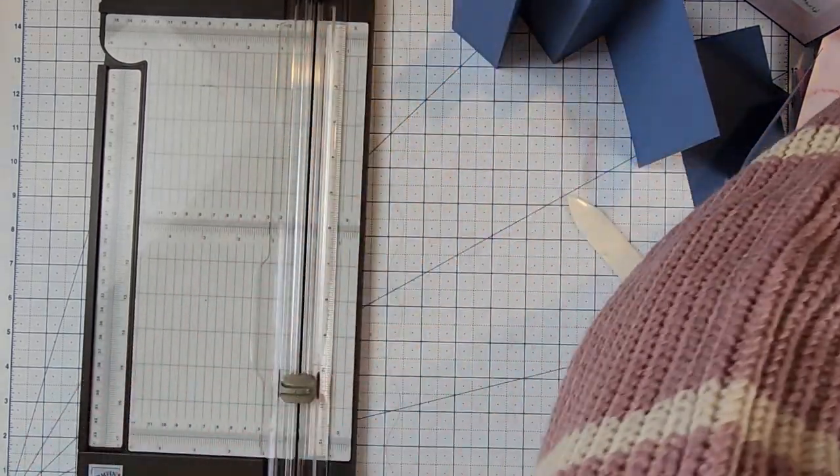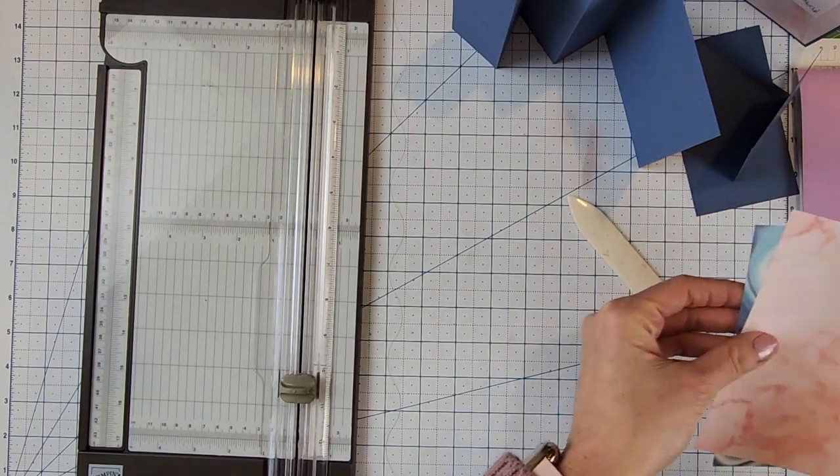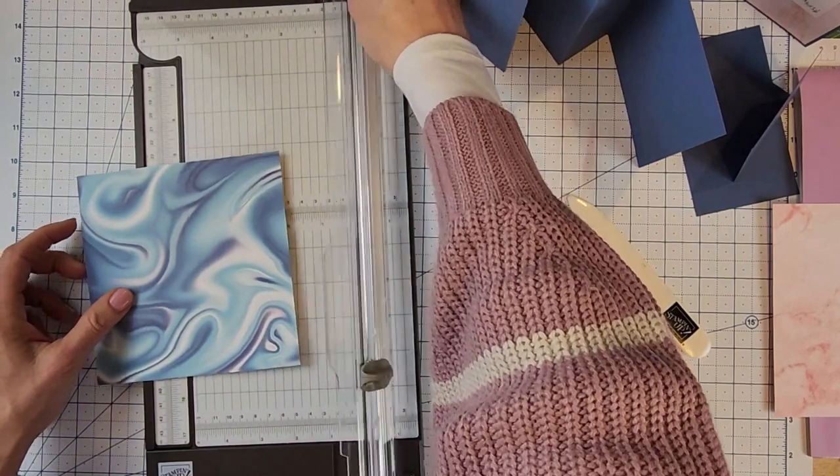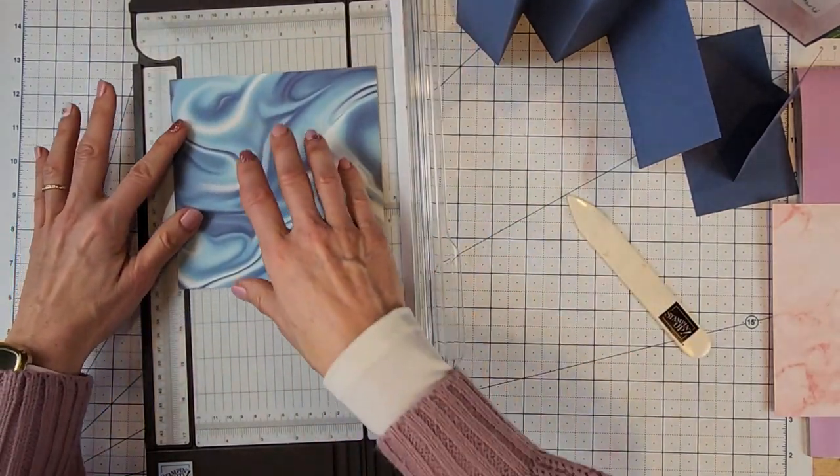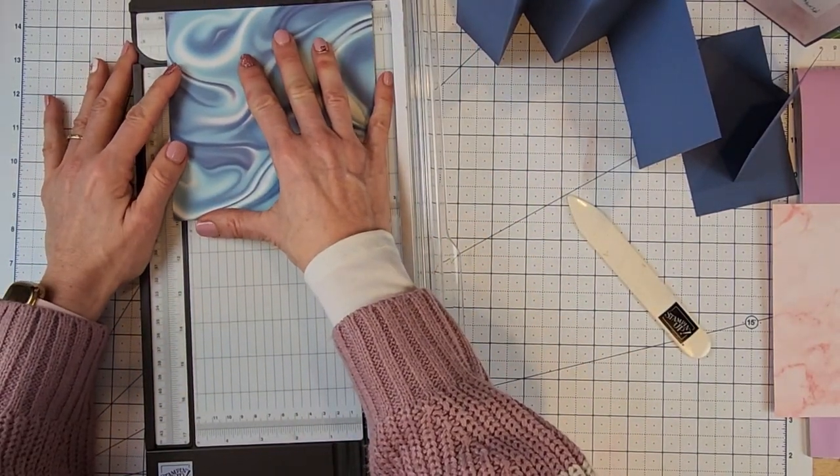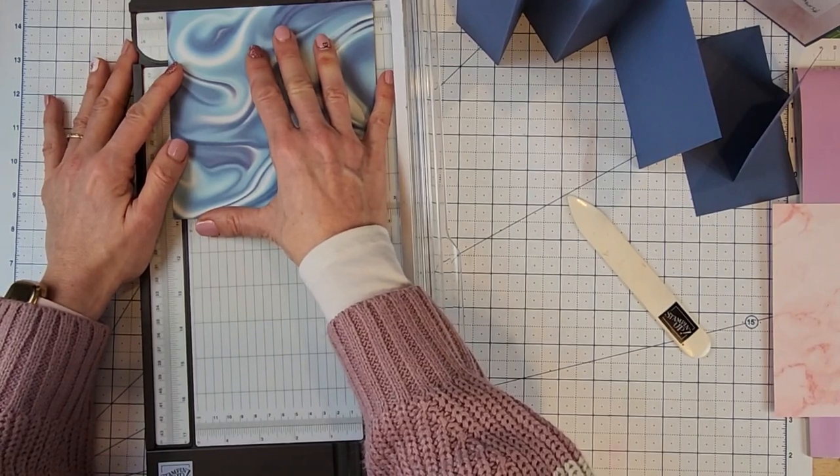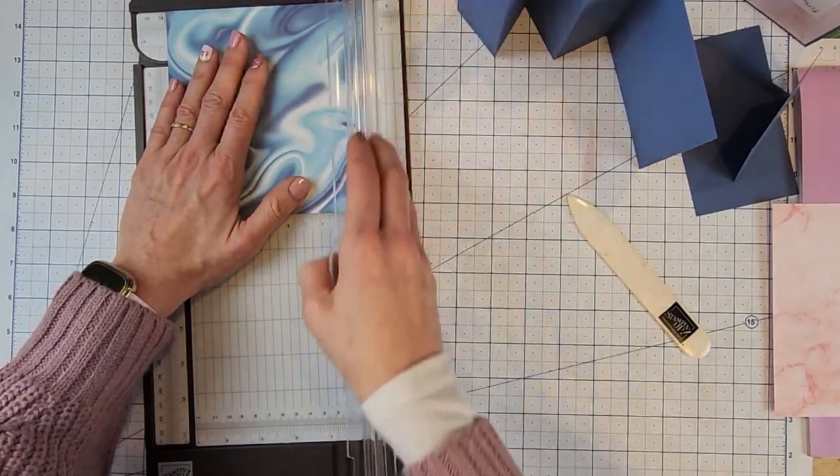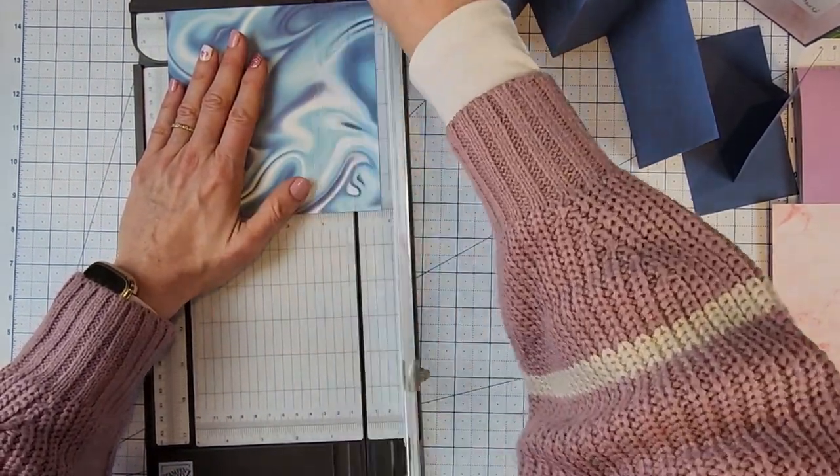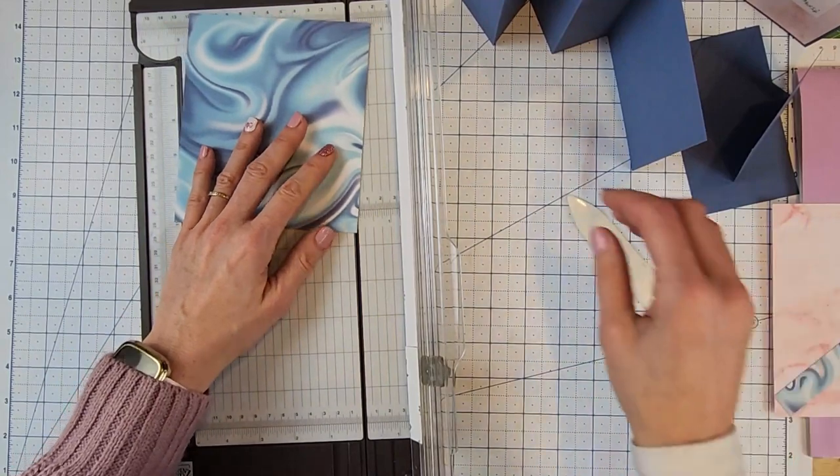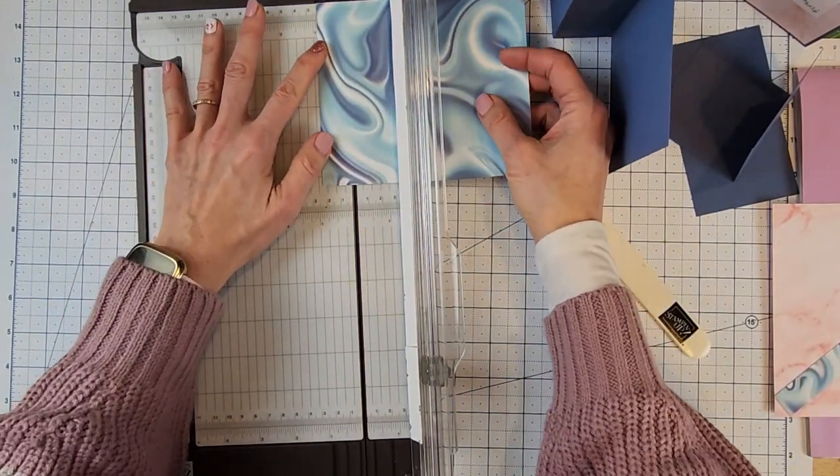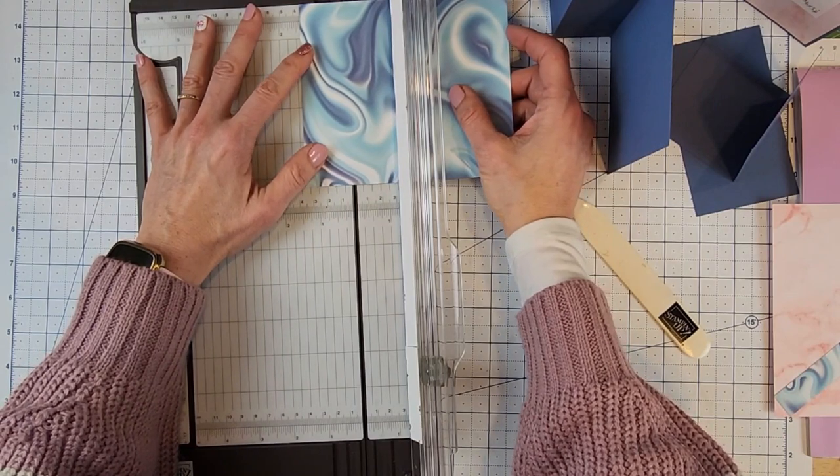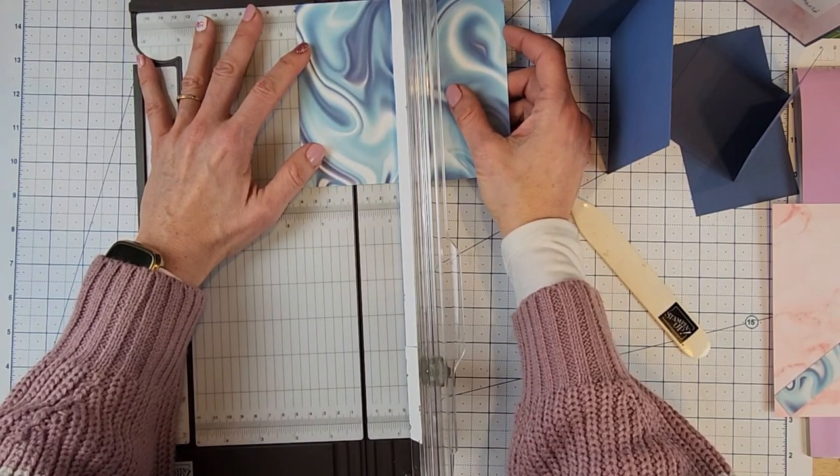Next, we want to cut our designer series paper. So I have a piece of 6 by 6 here, and we're going to cut down to 5.25 inches. So I'm just going to cut off three quarters of an inch. That will be a scrap. And then we're going to cut these down to 1.5 inches. We need four of these, or three, or two.